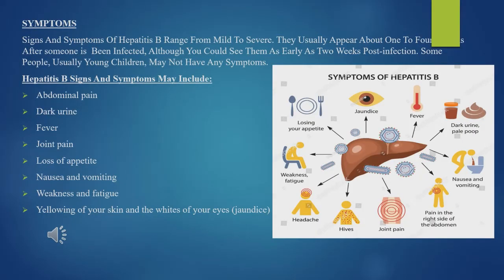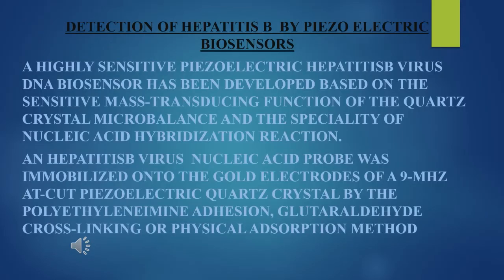Signs and symptoms of hepatitis B range from mild to severe, usually appearing about one to four weeks after infection. Some people, usually young children, may not have any symptoms. Symptoms may include abdominal pain, dark urine, fever, joint pain, loss of appetite, nausea and vomiting, weakness and fatigue, and yellowing of the skin and whites of the eyes.